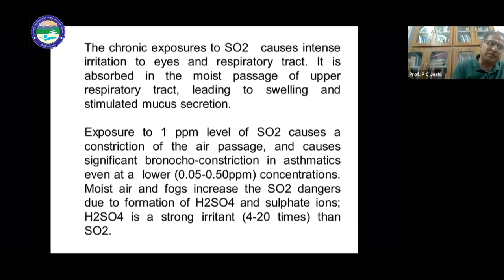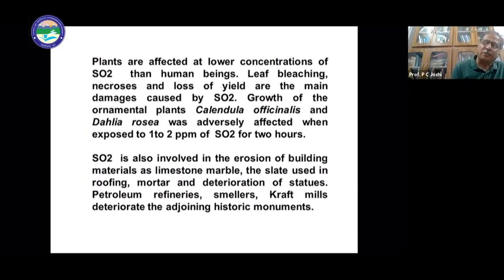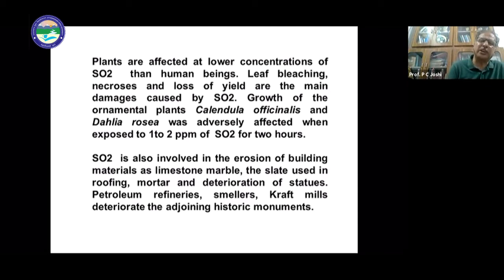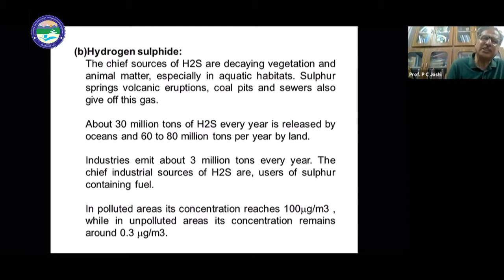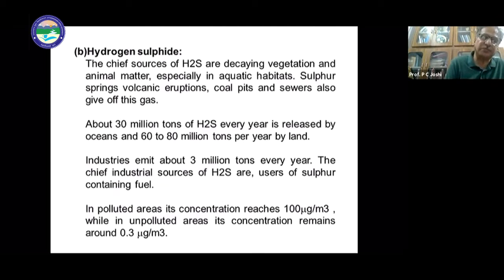Sulfur dioxide becomes very dangerous for human health. Plants along the roadside become discolored due to sulfur dioxide. The chief sources of hydrogen sulfide are decaying vegetation and animal matter, especially in aquatic habitats, along with sulfur springs, volcanic eruptions, and coal processing plants.